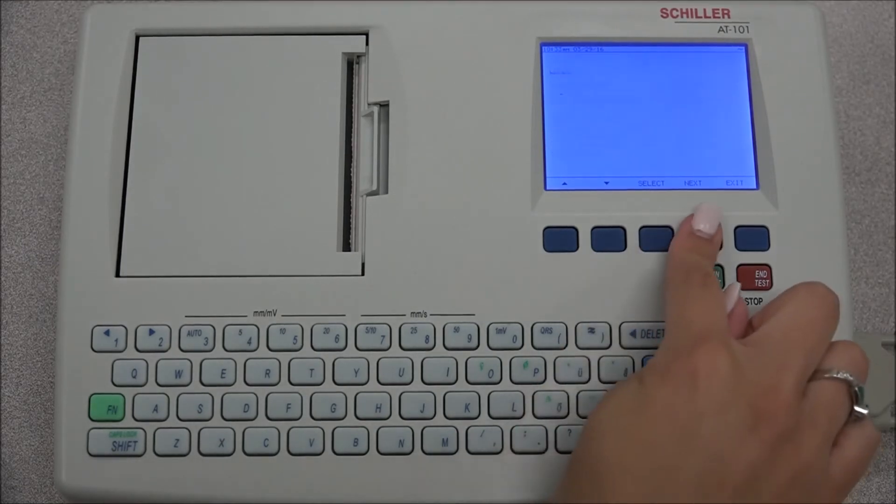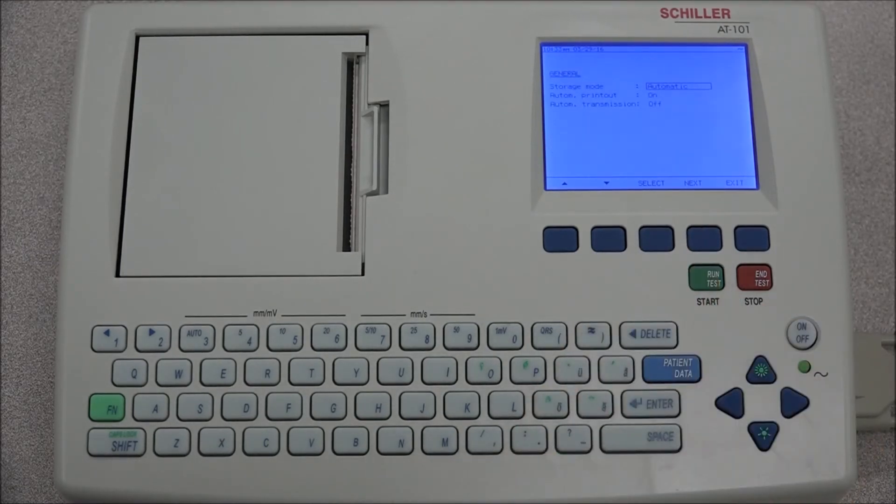Under general, the auto-storage can be set to automatic, manual, or off. This means that once a recording has been made, it will automatically be stored if set to automatic. The automatic printout can be turned on or off, as well as the automatic transmission.